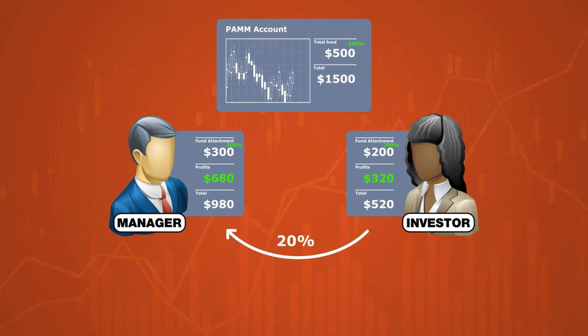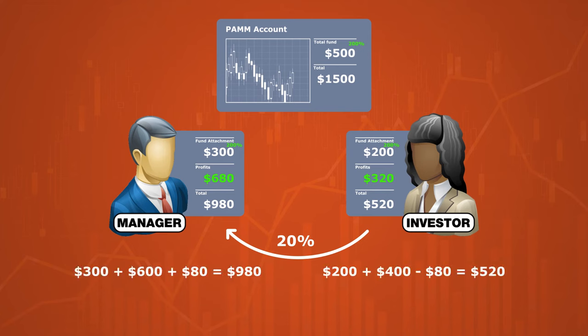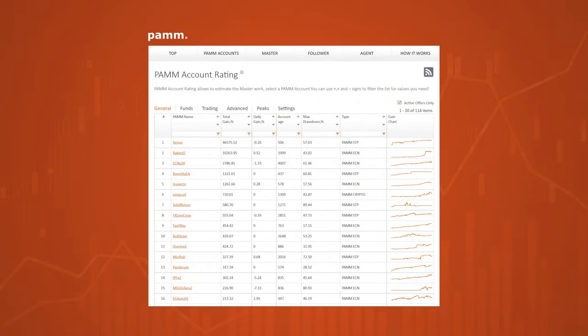Let's not forget about the manager's fee. In our case, it's 20% of the investor's profit of $400, that's $80. Ultimately, this trading interval brought $520 for the investor and $980 for the manager.